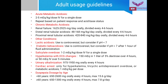Adult dosing guidelines: in acute metabolic acidosis, give 2–5 mEq/kg IV as a single dose, repeating based on patient response and acid-base status. In chronic metabolic acidosis or renal failure, give 1625–2925 mg per day orally in divided doses every 4–6 hours. In distal renal tubular acidosis, give 48–168 mg/kg/day orally divided every 4–6 hours. In proximal renal tubular acidosis, give 420–820 mg/kg/day orally divided every 4–6 hours. In lactic acidosis, use is controversial but can be considered if pH is less than 7.